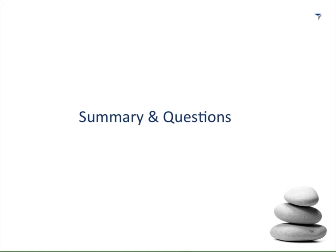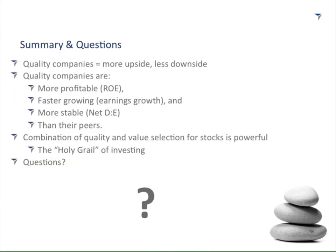In summary: quality companies have more upside and less downside than marginal companies. We measure that quantitatively using profitability — return on equity — growth in earnings or sales, and stability — net debt to equity — always compared versus peers. A very powerful combination is selecting good quality companies and considering valuation to make sure you don't overpay. The holy grail of investing is buying the most profitable, fastest-growing, safest company and underpaying for it.